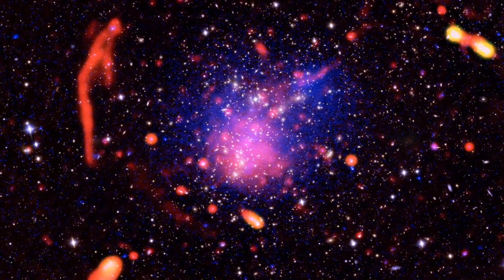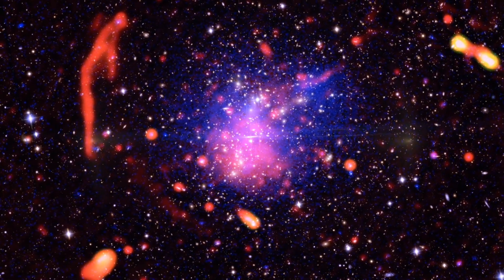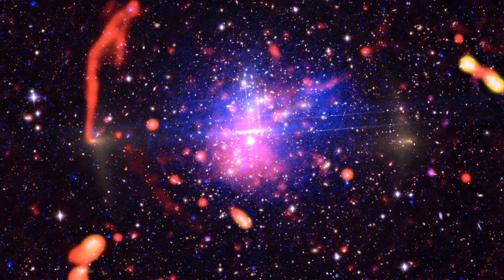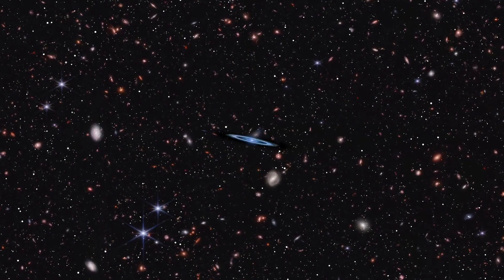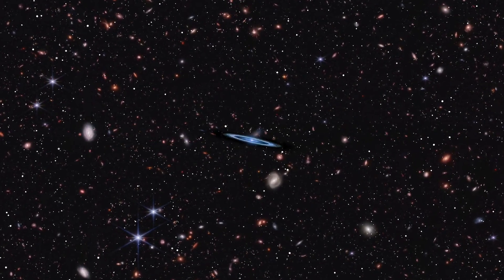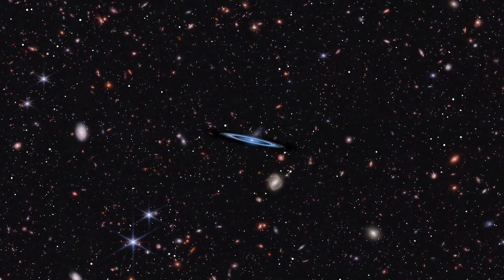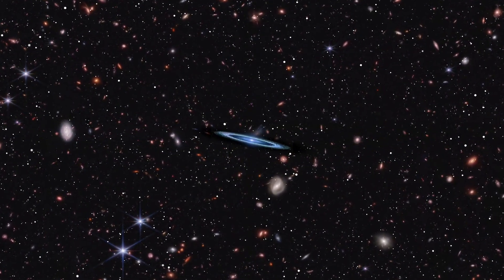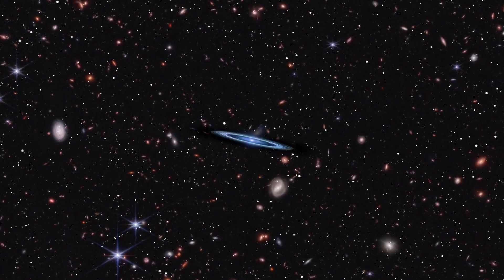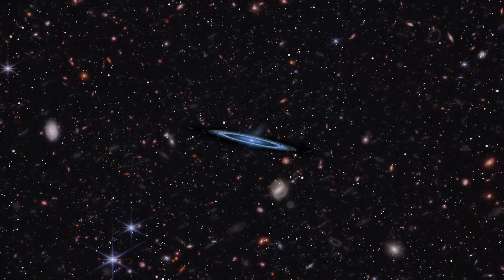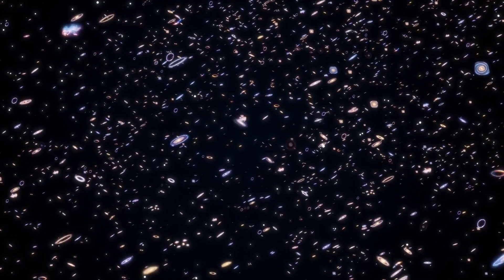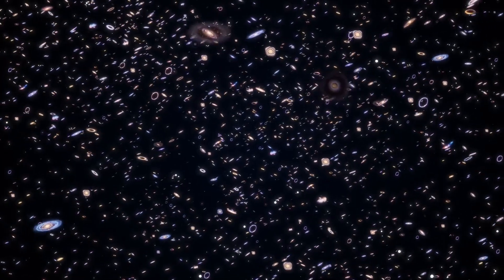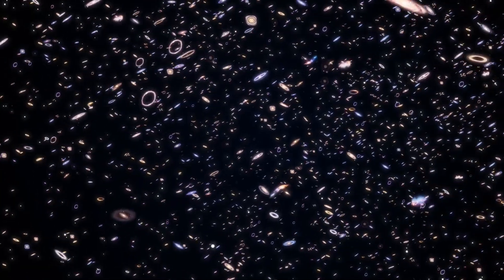These include the so-called universe-breakers, massive galaxies found just 500 to 700 million years after the Big Bang. These galaxies, similar in size to the Milky Way, appear much too early in the cosmic timeline according to the standard CDM model, which combines general relativity with the presence of cold dark matter and a cosmological constant. That model suggests that matter needed more time to coalesce into galaxies of such scale. Yet observations repeatedly tell a different story.